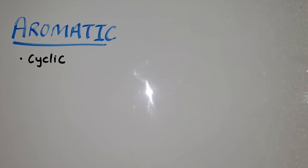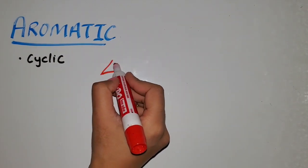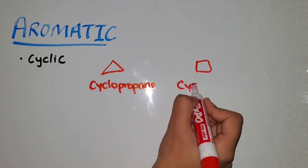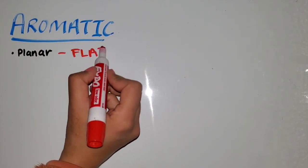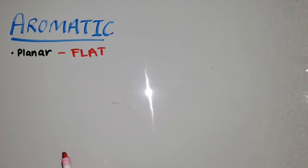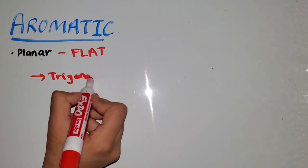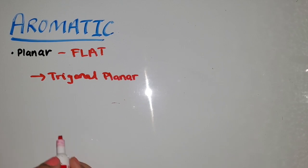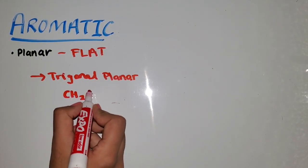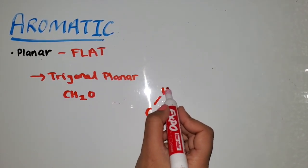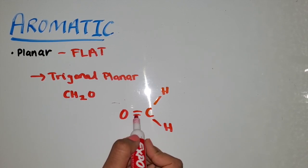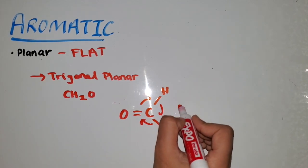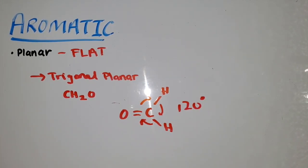The first condition for a molecule to be aromatic is that it has to be cyclic — in other words, it has to be a ring structure. Examples include cyclopropane and cyclobutane. In addition to being cyclic, aromatic molecules also have to be planar — they have to be flat. You want to look out for bonds that have certain geometries, one type being trigonal planar. For example, in CH2O we have a central carbon connected to two hydrogens and an oxygen with a pi bond, with sigma bonds at 120-degree angles — this molecule is planar.